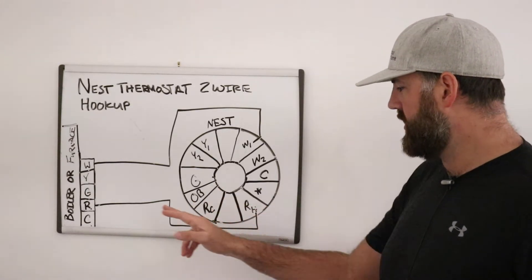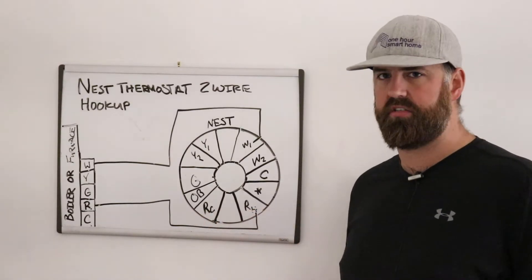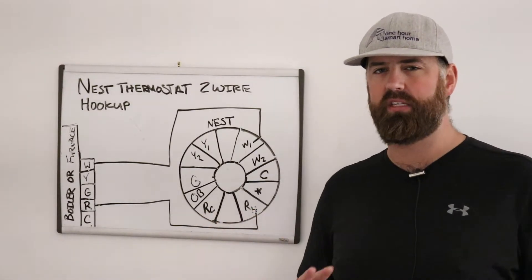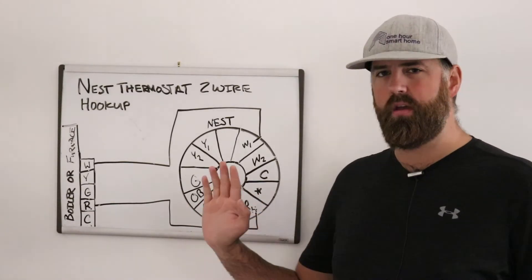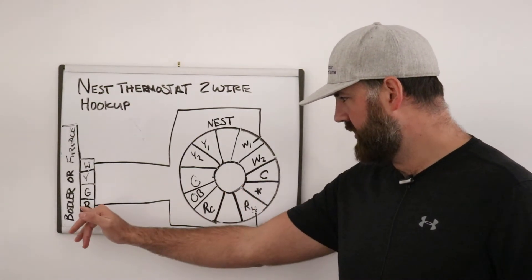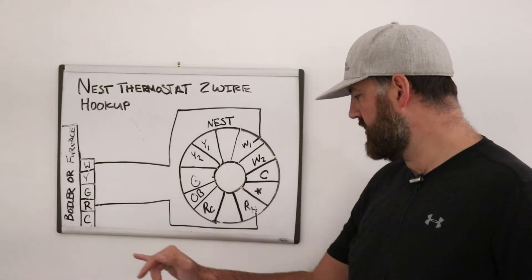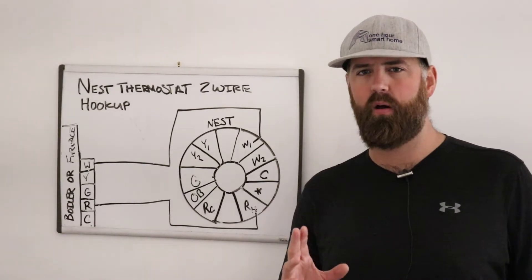You can put the R wire in the RH terminal or in the RC terminal and it will work the exact same. It doesn't hurt the nest and it is not wrong or it is not right. But for a matter of convention I typically when using a heating system put the R terminal, the R wire in the RH for power heating.